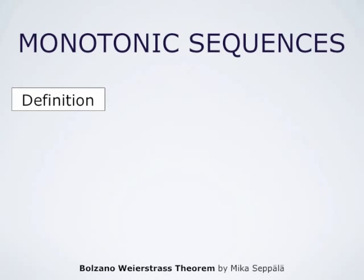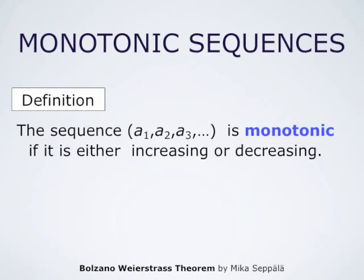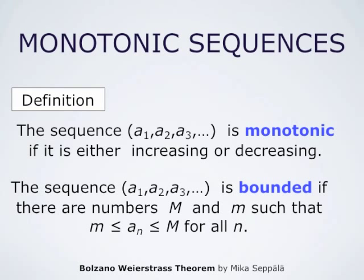Monotonic sequences are defined using these concepts. We say that a sequence a1, a2, a3 is monotonic if it is either increasing or decreasing. A sequence a1, a2, a3 and so forth is bounded if there are numbers M and m such that m is at most a_n and a_n is at most M for all n.